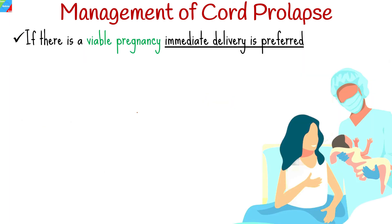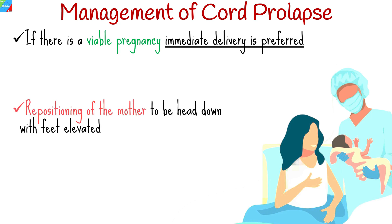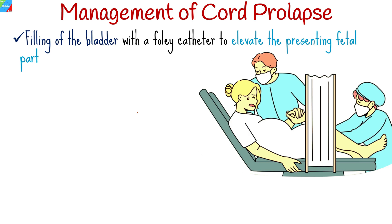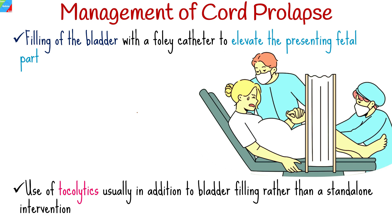Interventions in the case of cord prolapse, in the setting of a viable pregnancy, typically involve immediate delivery by the quickest and safest route possible, usually requiring cesarean section, especially if the woman is in early labor. Other interventions include repositioning the mother head-down with feet elevated, manual elevation of the presenting fetal part, filling of the bladder with a Foley catheter to elevate the presenting fetal part, and use of tocolytics, usually in addition to bladder filling rather than as a standalone intervention.